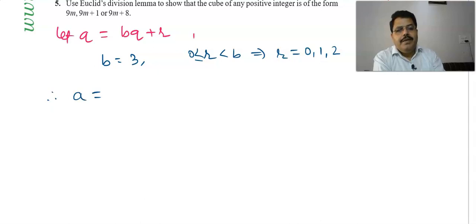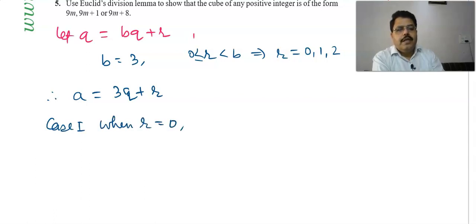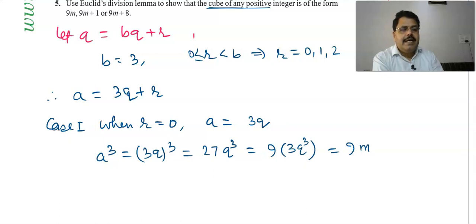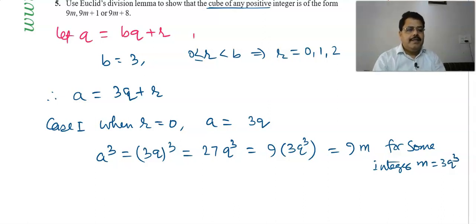Case 1: when r = 0, a = 3q, so a³ = 27q³ = 9 × (3q³) = 9m, for some integer m, where m = 3q³. Since q is an integer, q³ is also an integer, and 3q³ is an integer.